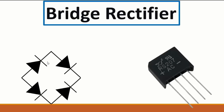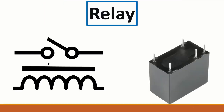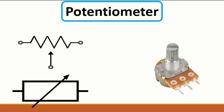Here we have the relay. The relay contains two components: an inductor and a switch. When current passes through the inductor, the switch becomes energized and closes, allowing voltage or current to pass through it. Here we have the inductor and here we have the switch with its two connection points.